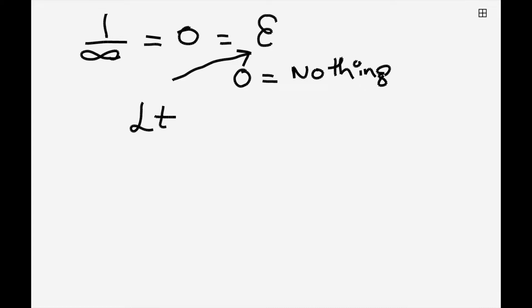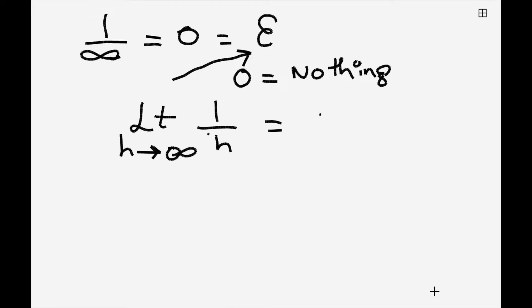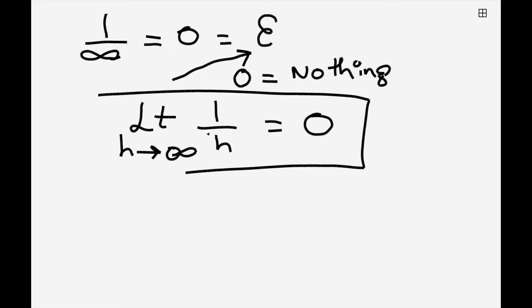When the limit of h tends to zero, one by h tends to infinity. And when the limit of h tends to infinity, one by h equals to zero.